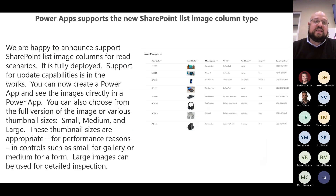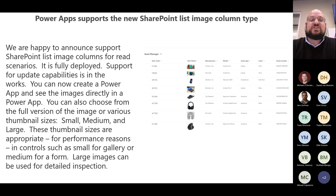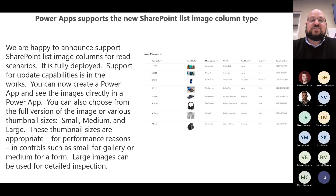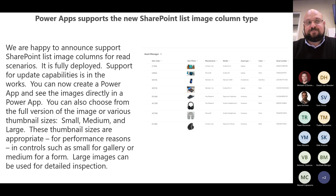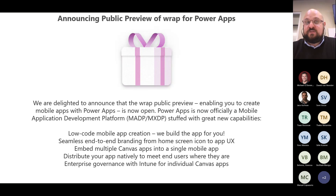The new SharePoint list image column type is now supported by Power Apps. Instead of pointing to a URL, you'll be able to pull that list through directly. There are also different size options for the image — thumbnail, small, medium, and large — so you can adjust as needed depending on what you're looking at doing. This is quite nice for those who use SharePoint for their apps.